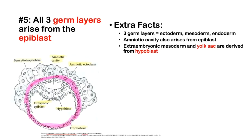Number 5: All three germ layers arise from the epiblast. The ectoderm, mesoderm, and endoderm all come from the epiblast layer. The hypoblast creates the yolk sac and extra-embryonic mesoderm. The amniotic cavity also arises from the epiblast.